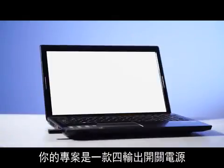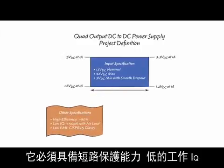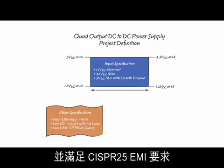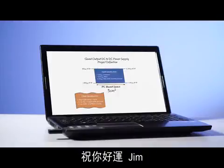Good morning, Jim. Your project is a four-output switching power supply. The input voltage range is 3 volts to 42 volts. It must be short circuit protected, have low operating IQ and meet CISPR 25 EMI requirements. You have 5 square centimeters. Good luck, Jim.